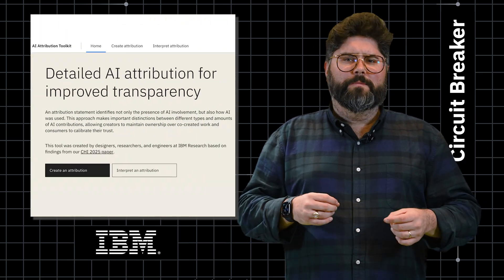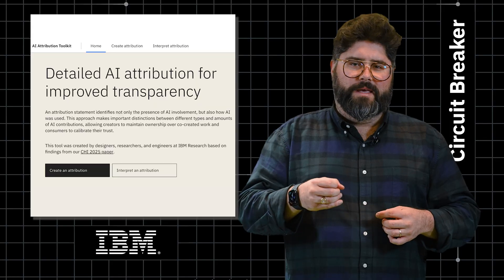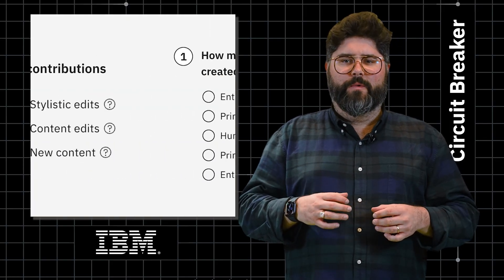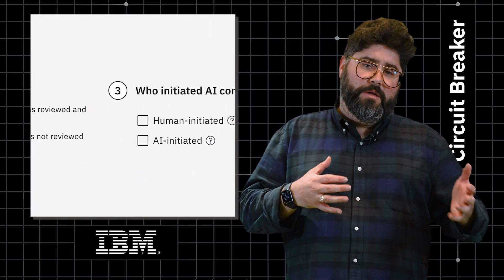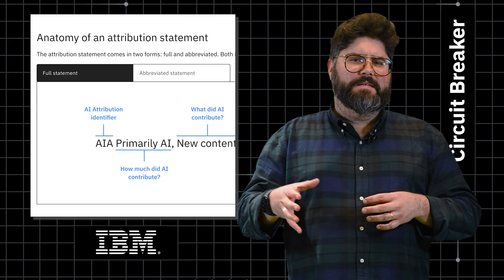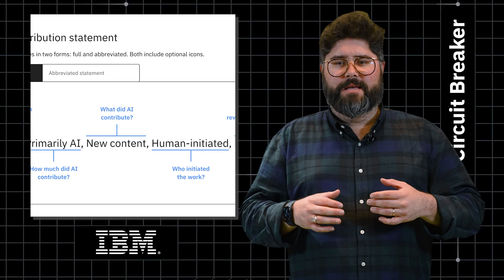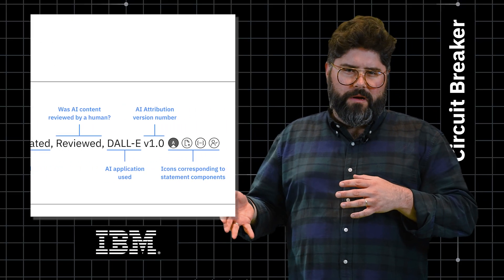Last week, the group released the AI-attribution toolkit. It's a first attempt at showing what a voluntary reporting standard might look like. The toolkit makes it easy for users to write an attribution statement that explains exactly how they used AI in their work.